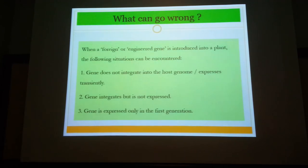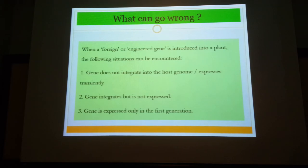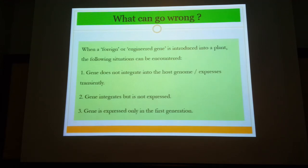There are things which can go wrong. When you introduce a foreign gene into a plant, it is generally not accepted into the chromosome — the plant resists it. The gene may not integrate into the host genome; it may express transiently — present in F1 but lost in F2. In such cases, it is best to resort to tissue culture rather than continued breeding, giving you control over gene expression and integration. Sometimes the gene integrates but is not expressed, requiring you to redesign promoters and redo the experiment.